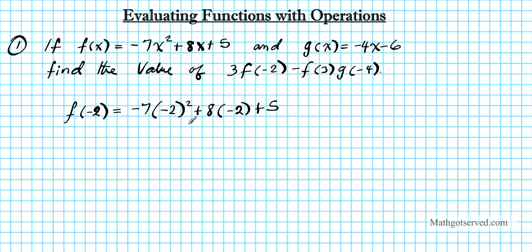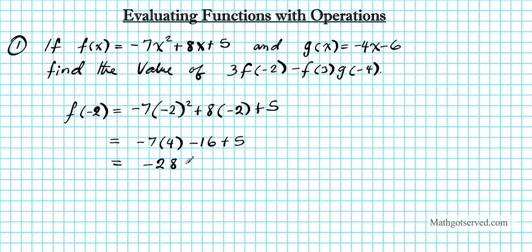Now we're going to use the order of operations to evaluate this expression. We need to do the exponents first before we multiply, and then we'll add and subtract. So this becomes negative 7 times 4 — since negative 2 times negative 2 is positive 4 — and then 8 times negative 2 is negative 16, plus 5. Negative 7 times 4 is negative 28, and then minus 16 plus 5 is negative 11. Since the signs are the same, we add and keep the sign: negative 39.